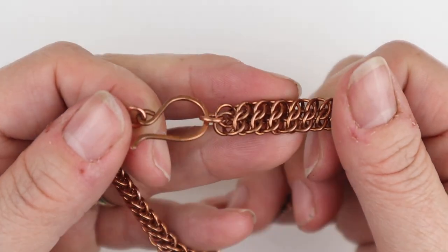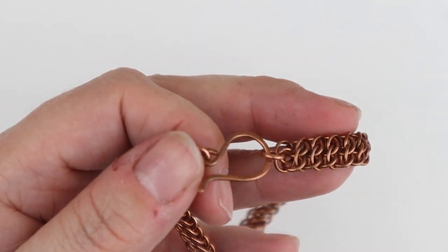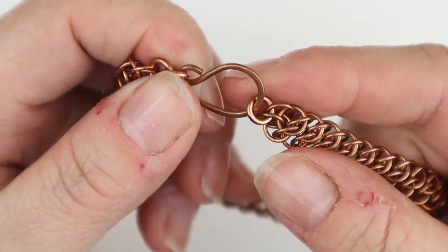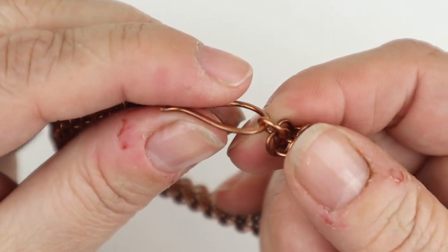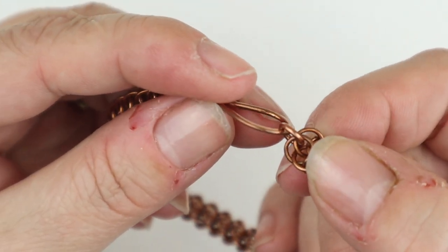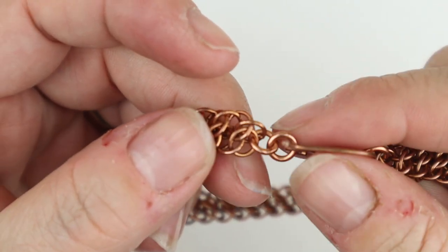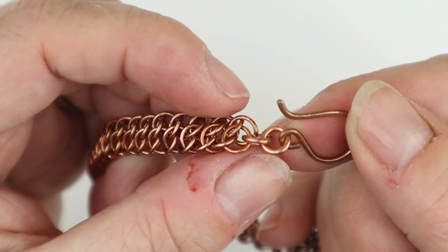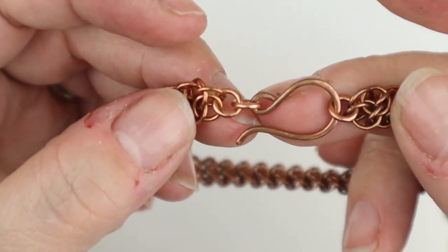To attach the clasp, all I've done is I've taken a smaller thicker jump ring - in this case it's a 3.75 jump ring made on a 1.25 wire. All I've done is I've gone through the eye on one end and then I've gone through the eye on this end, and then just attached another open jump ring just to get that clasp to sit nice and straight.